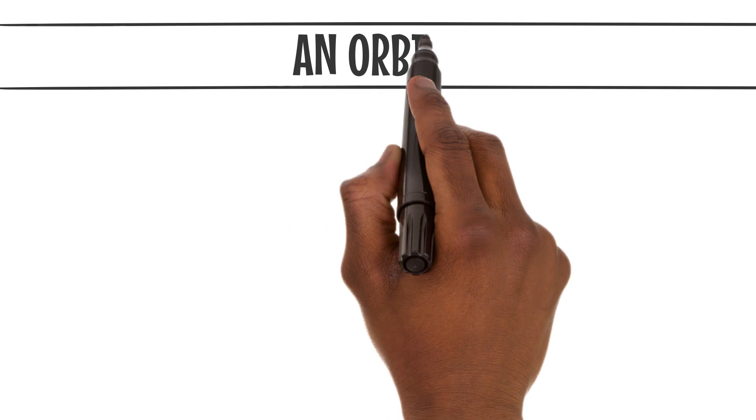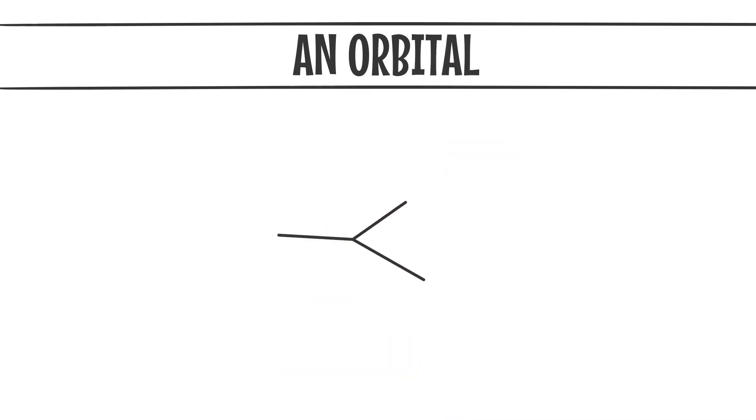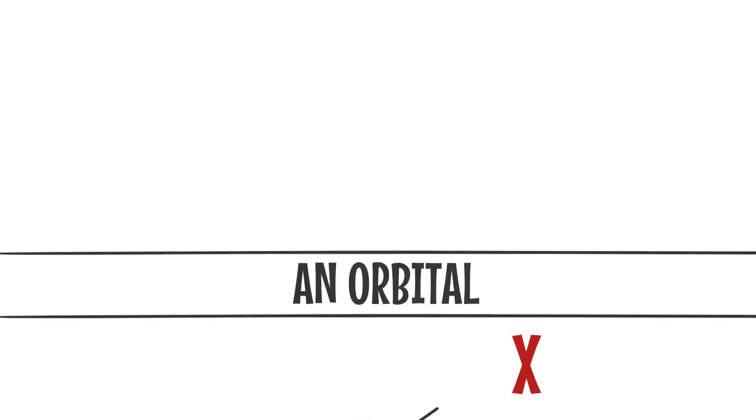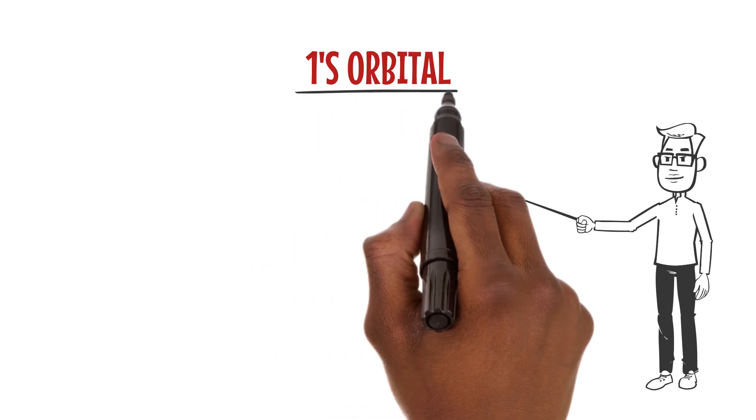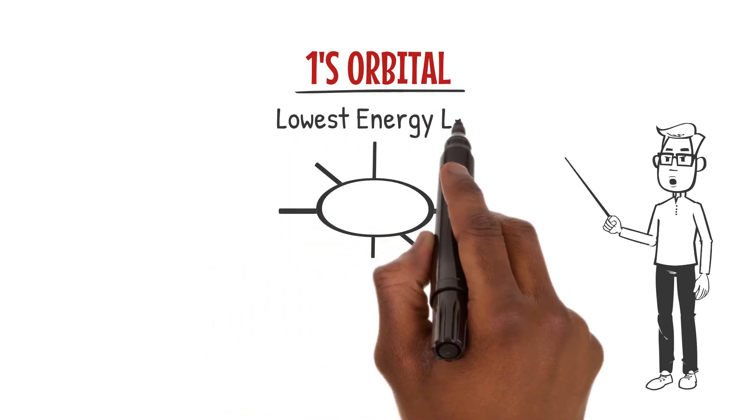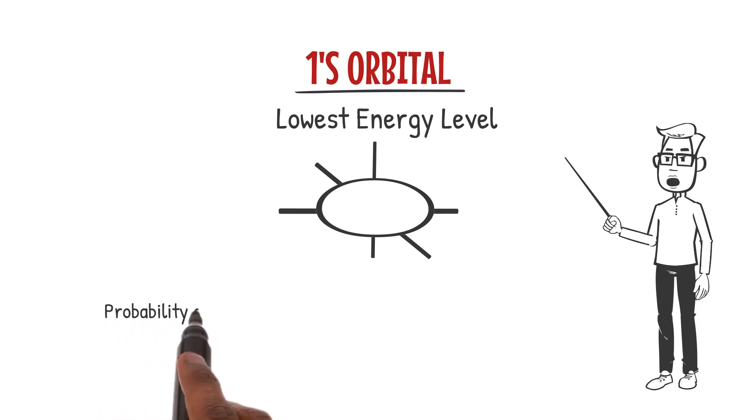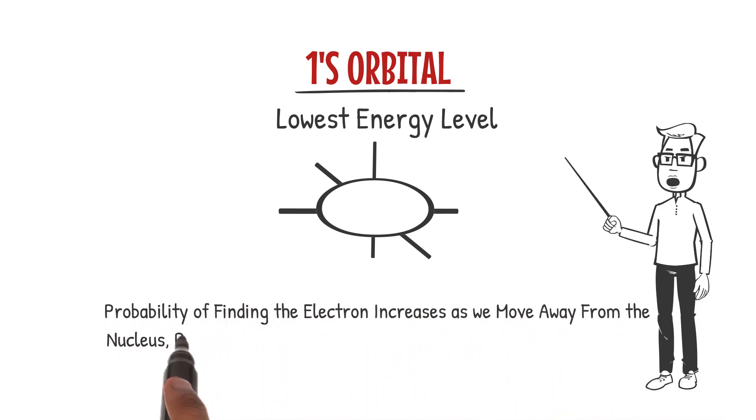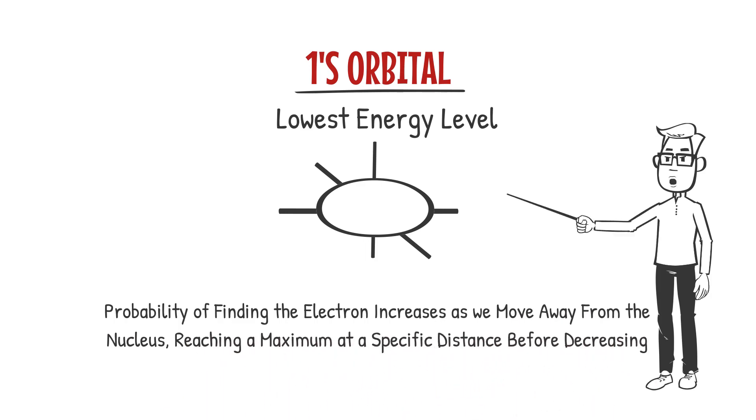An orbital is a three-dimensional region around the nucleus where we have the highest probability of finding an electron. Let's start with the simplest orbital, the 1s orbital. The 1s orbital is spherical and represents the lowest energy level. The probability of finding the electron increases as we move away from the nucleus, reaching a maximum at a specific distance before decreasing.